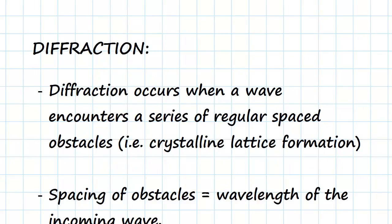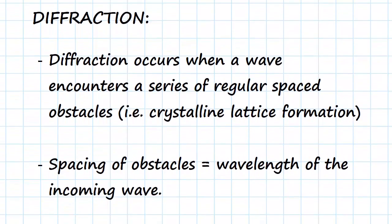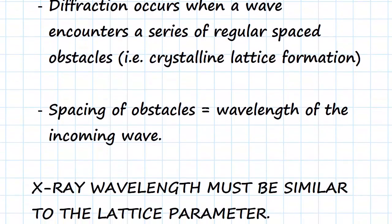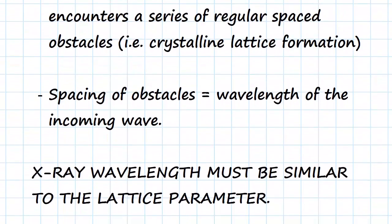So firstly, what is diffraction? Well, diffraction occurs when a wave encounters a series of regularly spaced obstacles. The wave we're talking about in this case is X-ray waves, and the regularly spaced obstacles are provided by the lattice parameter A evenly spaced out, so the crystalline lattice formations as we've been looking at in the previous videos. The spacing of the obstacles has to be equal to the wavelength of the incoming wave.